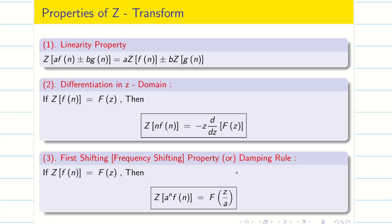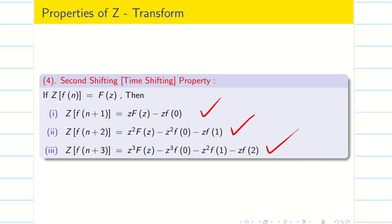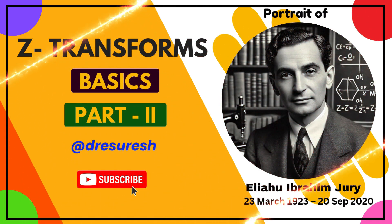Using these properties, we will solve simple problems in the upcoming sessions. Finally, we have the second shifting property, also known as the time shifting property, which we will use in solving difference equations — just note it for MCQ. We will see simple problems and problems using properties in the upcoming videos. Thanks for watching. Subscribe to our channel and share with your friends. See you in the next video.